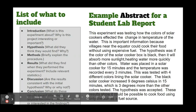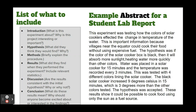In this example, let's look at the first sentence: 'This experiment was testing how the colors of the solar cooker affected the change in temperature of water.' So we're telling what the experiment was about. Then: 'This is important information because villages near the equator could cook food without using expensive fuel.' — that's telling why it is important.